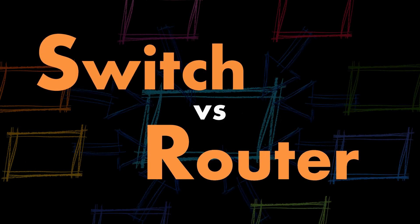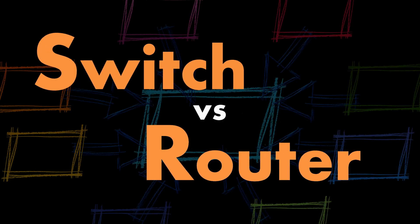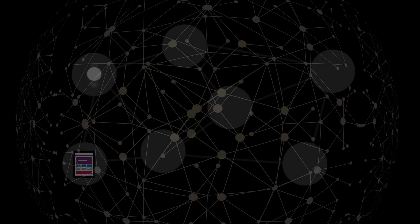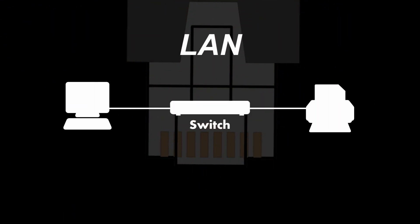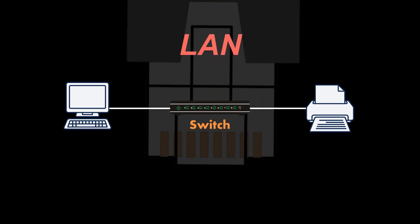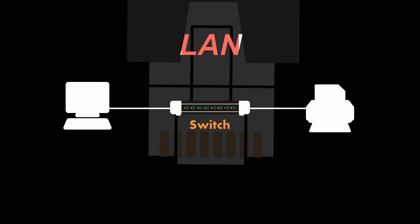The switch and the router are two core components in most modern networks. The internet is considered a system of smaller networks in which each device connects to share information. The local area network can be the most basic of networks that allow for the exchange of data, and this type of connection is usually facilitated by a switch.